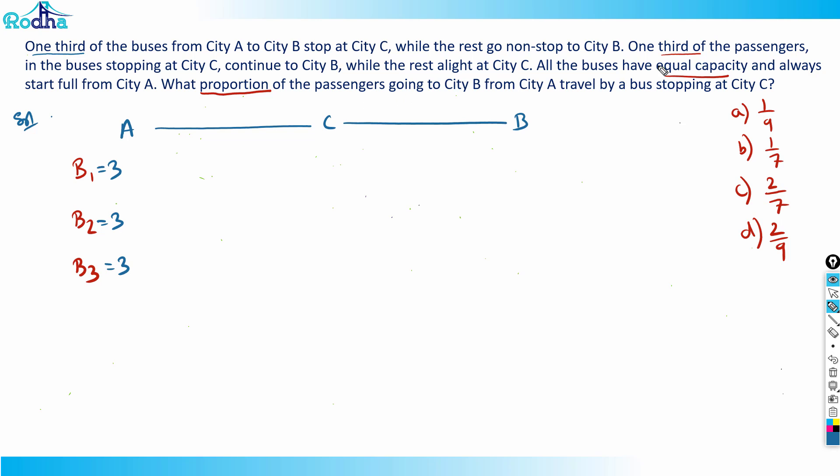One third of the buses from City A to City B stop at City C. Out of three buses, one third is only one. That means only one bus will stop at City C. This one bus will stop at City C and the rest will directly go to City B. I would consider only B3 stopping at City C.